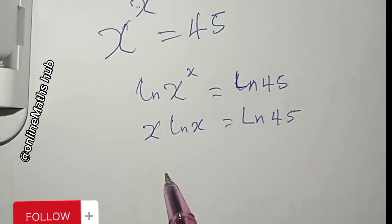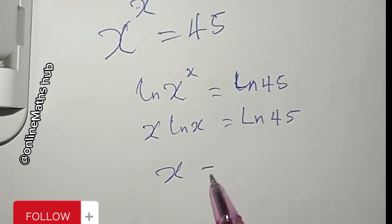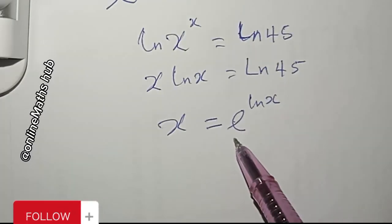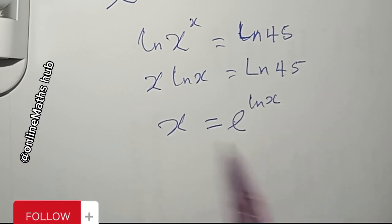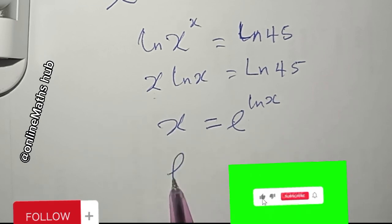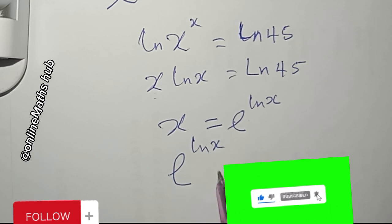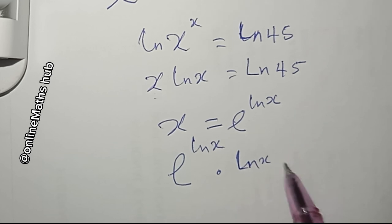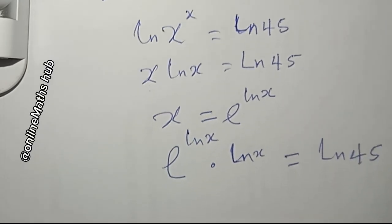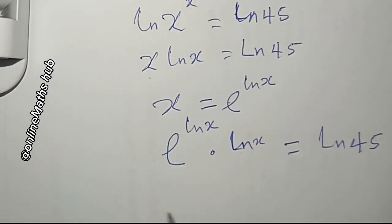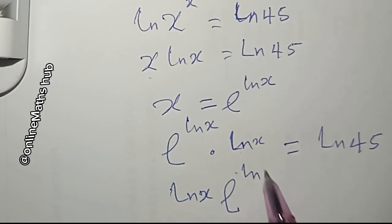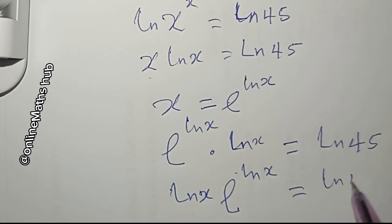Next, I want to make a substitution. We can write x as e^(ln x), since e^(ln x) = 1·x = x. Replacing x with e^(ln x), the equation becomes: ln(x)·e^(ln x) = ln(45).